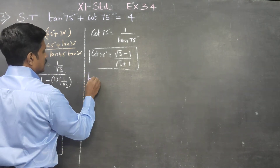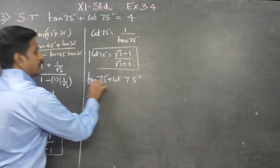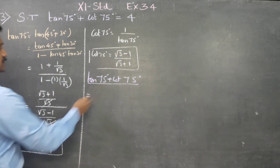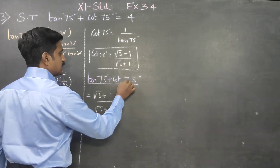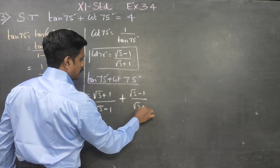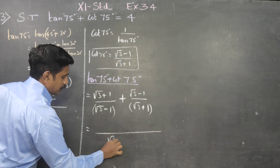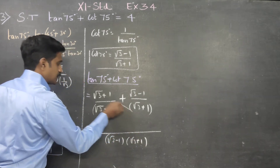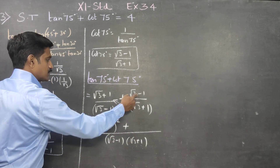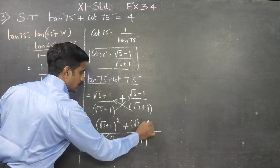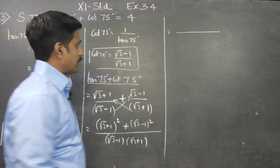I have found both cot 75 and tan 75. Now just add them together. Tan 75 plus cot 75 equals root 3 plus 1 over root 3 minus 1, plus root 3 minus 1 over root 3 plus 1. Taking LCM, the denominator is (root 3 minus 1)(root 3 plus 1), and we cross multiply the numerators: (root 3 plus 1) squared plus (root 3 minus 1) squared.